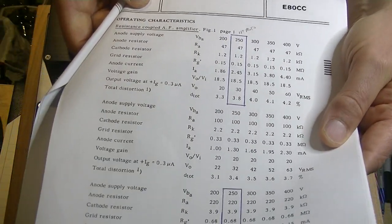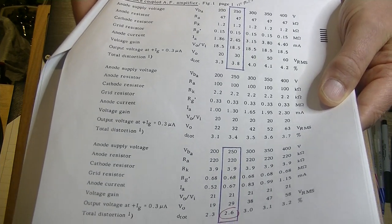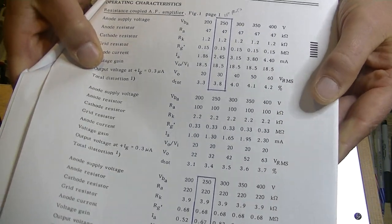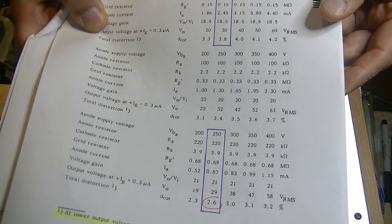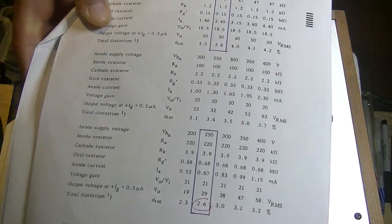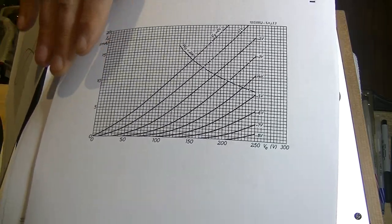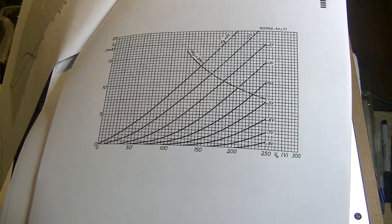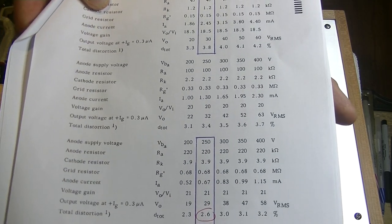You're always going to get typical characteristics of the tube, which help you design a circuit. In this case, they actually have operating characteristics, so they give us the entire circuit with three various operating points and all of the resistors required. What I did was I chose one of the operating points that the Philips engineers created, and I started from there.